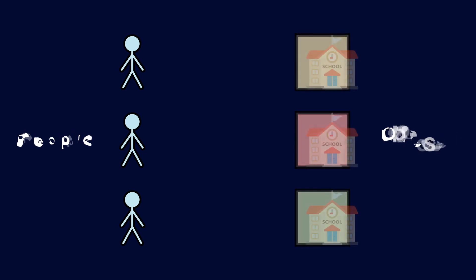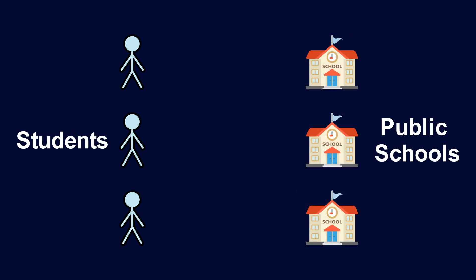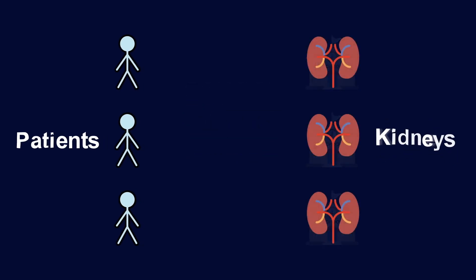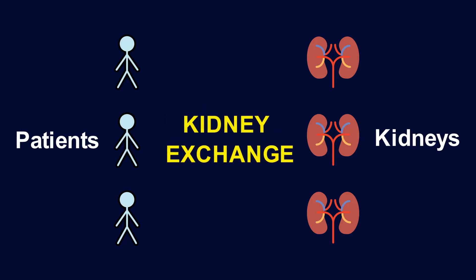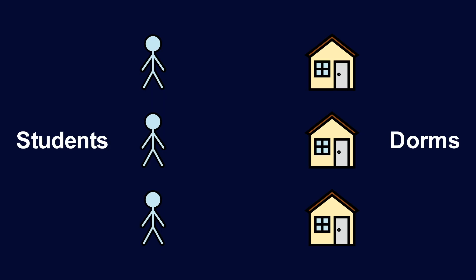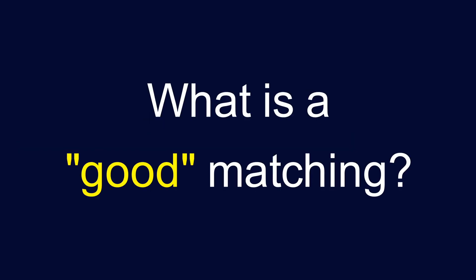This covers lots of situations. For example, we can have high school students and public schools — this is called the school choice problem. Or we can have kidneys and patients who need a kidney transplant — this is called the kidney exchange problem. Both of these problems have a lot of ongoing research. But for this video, we'll stick to students in dorms for simplicity, and we'll begin with the question of how do we define what good means.